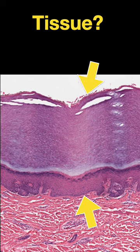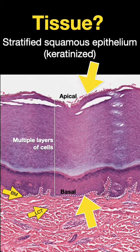What tissue is shown here? That's stratified squamous epithelium that is keratinized. You can see multiple layers of flat cells.